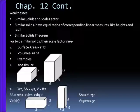To finish off with chapter 12, here are my weaknesses. And they are similar solids and scale factors. Similar solids have equal ratios of corresponding linear measures, like heights and radii. Here is the similar solids theorem. For two similar solids, their scale factors are the surface areas, which would be a² is to b², and the volumes, which would be a³ is to b³.